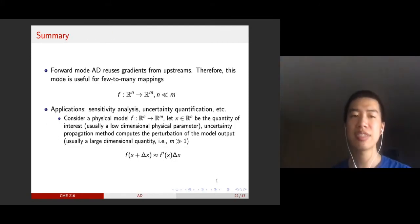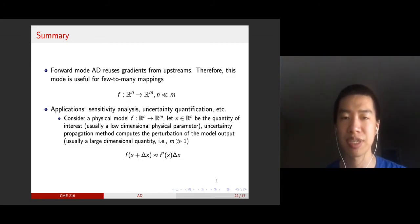In summary, forward mode automatic differentiation reuses gradients from upstreams and aggregates all the gradients, which makes it very efficient for few-to-many mappings, as we'll see in the next lecture.